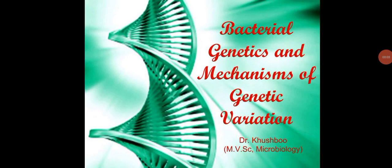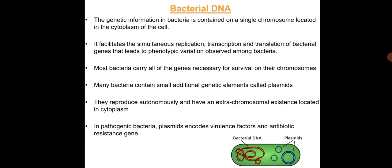Bacterial genetics and mechanism of genetic variation: the genetic information in bacteria is contained on a single chromosome located in the cytoplasm of the cell. It facilitates the simultaneous replication, transcription, and translation of bacterial genes, leading to phenotypic variation observed among bacteria. Although most bacteria carry all genes necessary for survival on their chromosomes, many bacteria also contain additional genetic elements.